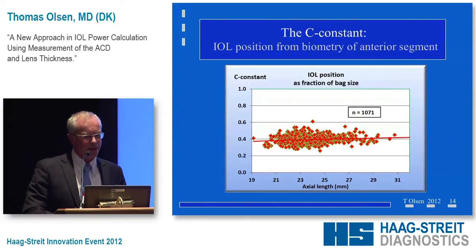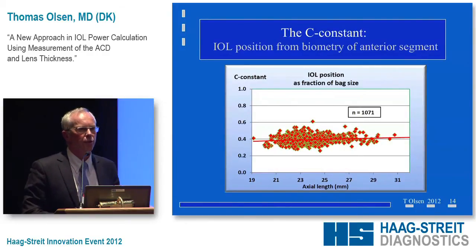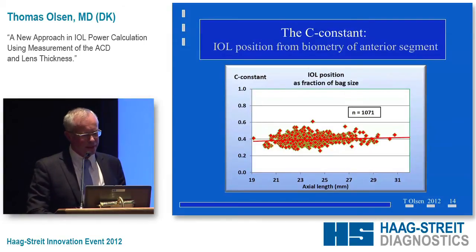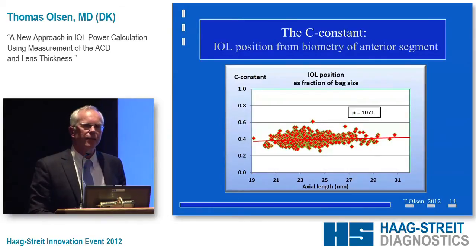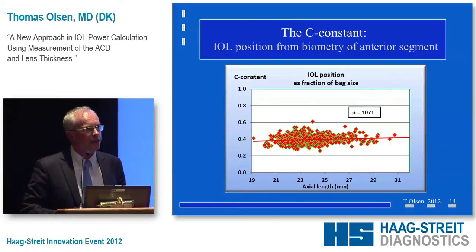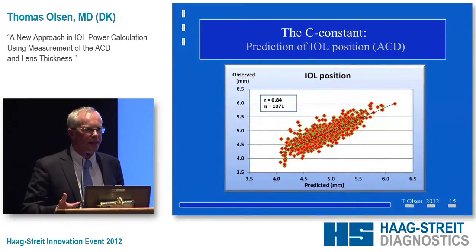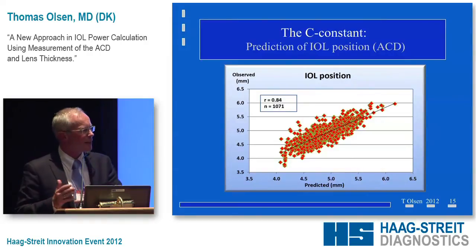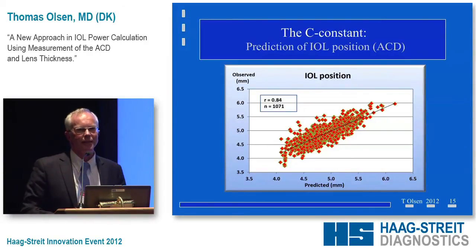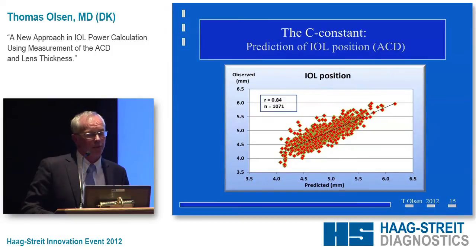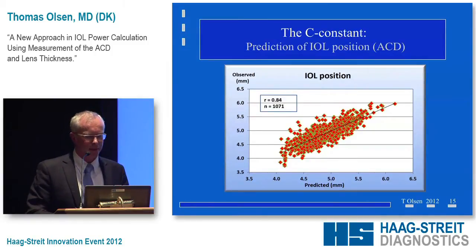The C constant for the Acrysof type of lens is about 0.4. Very importantly, this constant does not change over axial length, meaning we do not have a bias with axial length — so we don't need axial length in our predictions. If we take the anterior chamber depth and lens thickness pre-op and use that to predict the post-op situation, we have a nice correlation coefficient of about 0.8 — the highest correlation I've ever seen in any series.